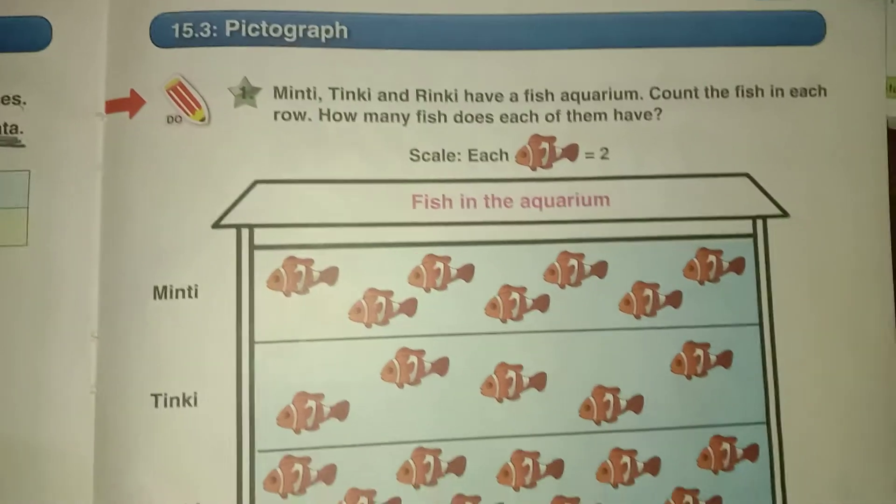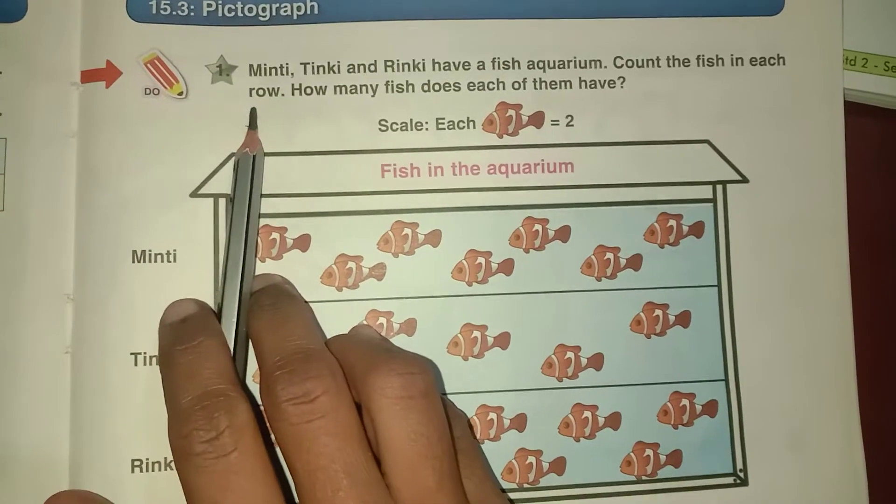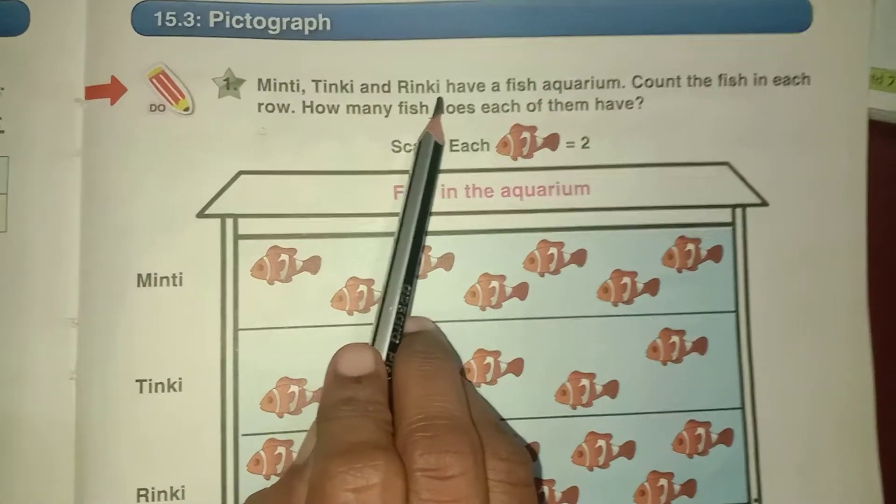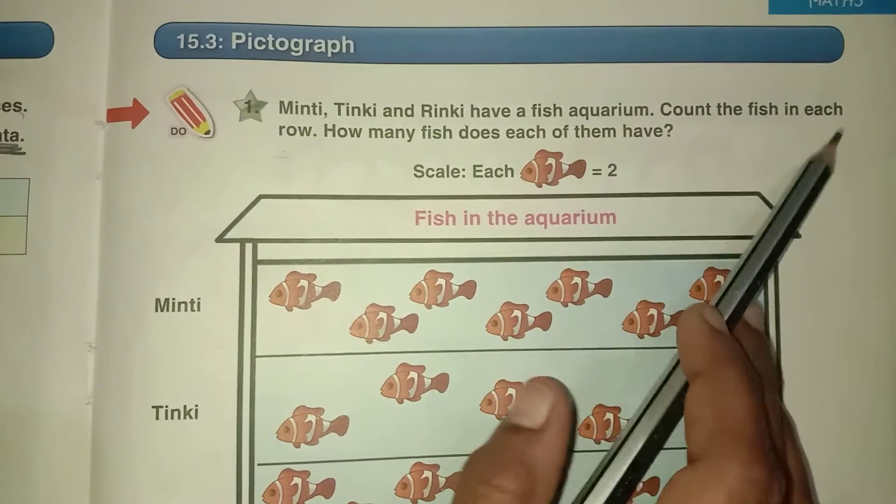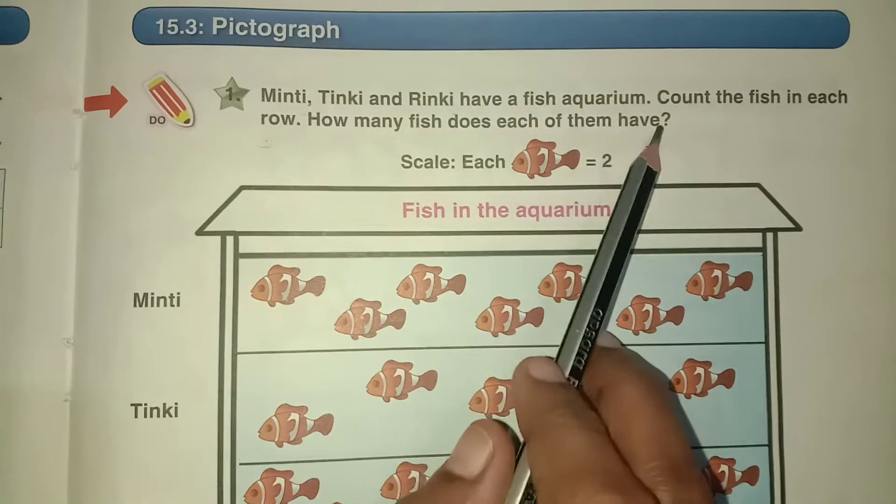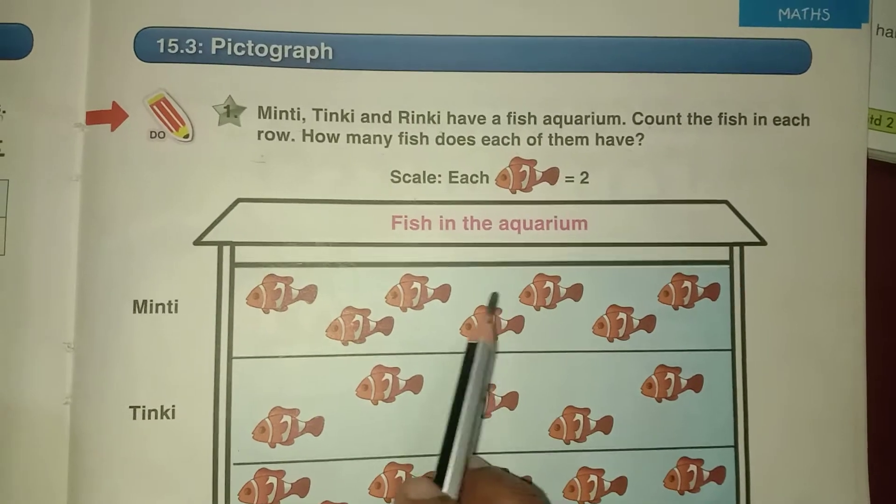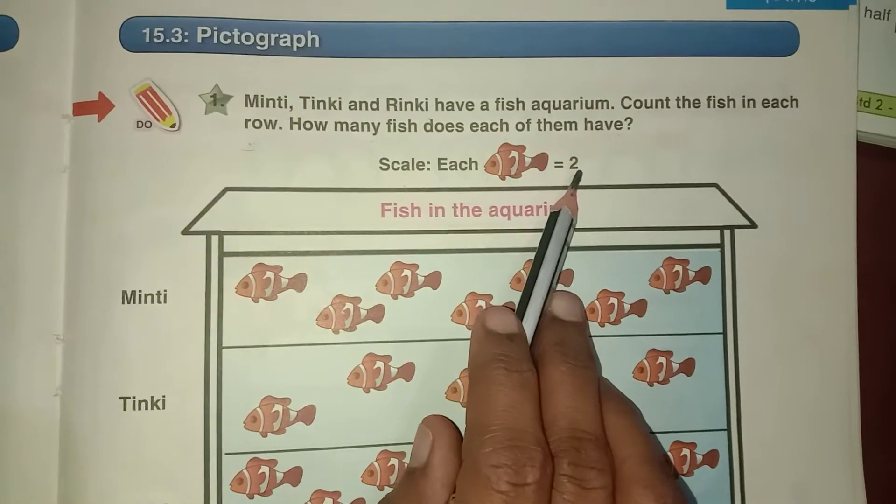Next, here they given pictograph. See they given an example here. Minty, Tinky and Rinky have a fish aquarium. Count the fish in each row. How many fish does each of them have? See here this is the scale how to count.